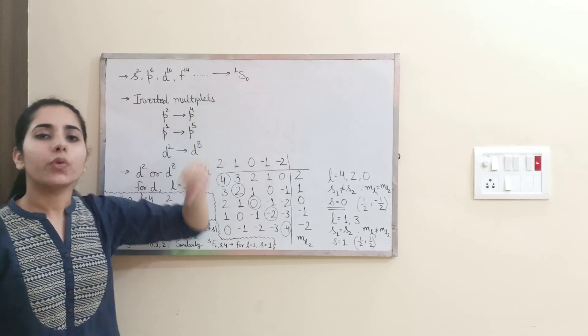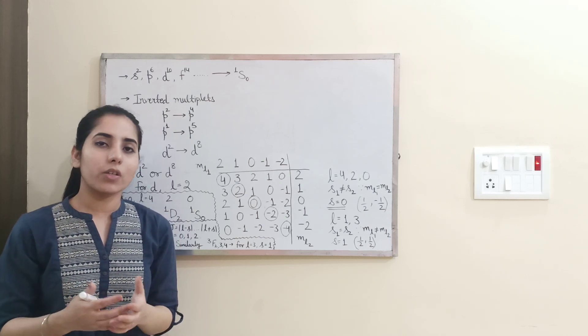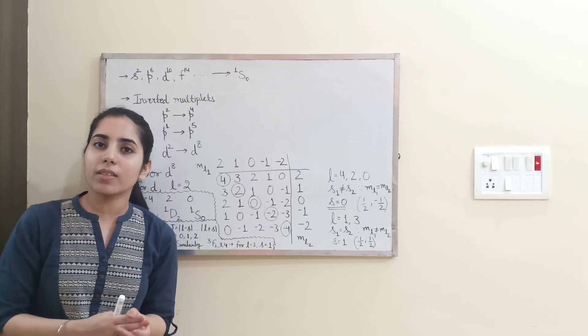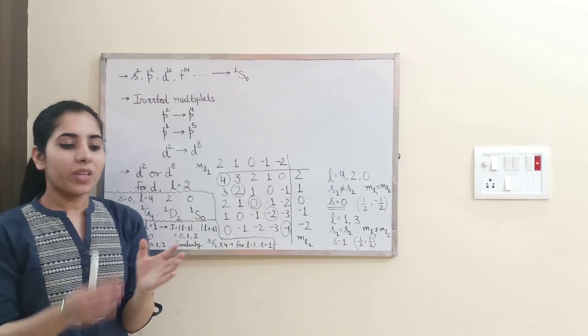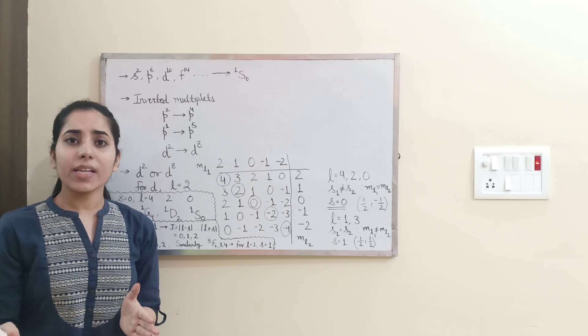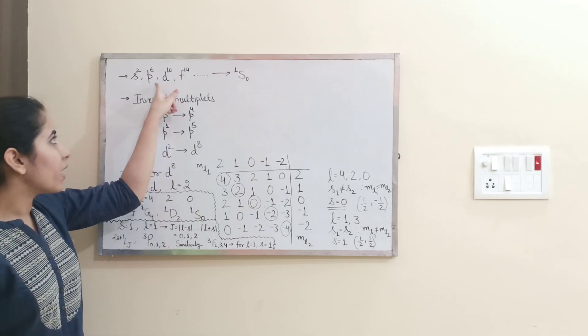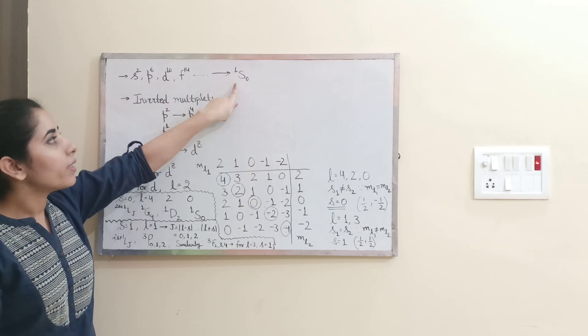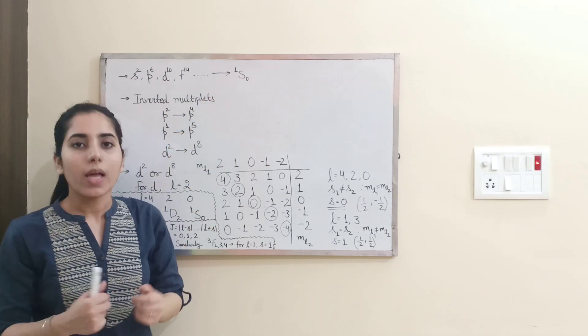You don't even need to work with some particular procedure or you don't even need to spend time in this. Because directly you can write that is 1s0. So if the last shell which is given to you, that is a closed shell or completely filled, any one of these, then its spectroscopic term notation will be 1s0. Clear?